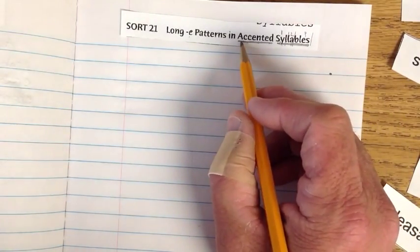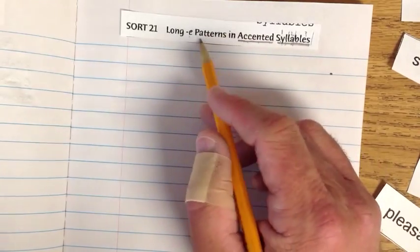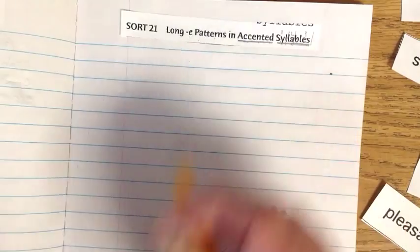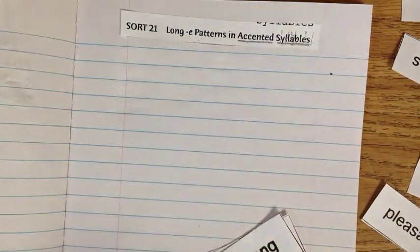Accented. Ac is the syllable that is accented. Patterns. Patterns. In. Okay? And we'll look at some of those in just a minute.